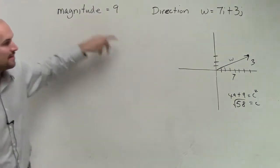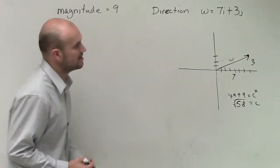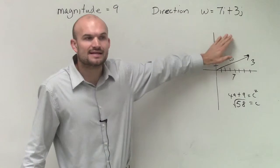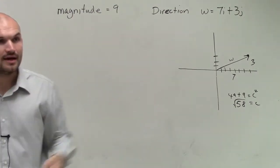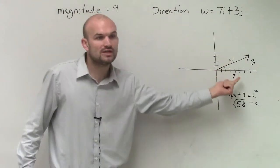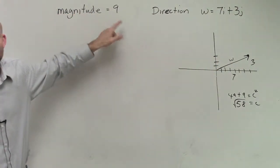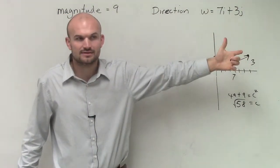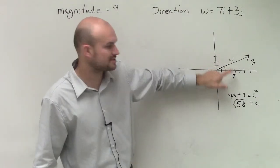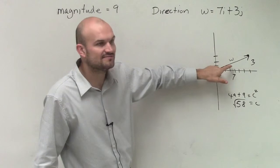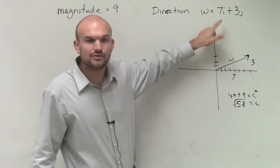They want us to write a vector that has the same direction — it follows right on this pathway — but has a magnitude of 9. We can take a vector and write it as a unit vector. A unit vector has a magnitude of 1, which is very helpful. Once we get this vector to a magnitude of 1, we still have the same direction, and then all we do is multiply by 9. If you just multiply this vector times 9, you'd get 7 times 9, which would not give a magnitude of 9. You have to create a unit vector first.